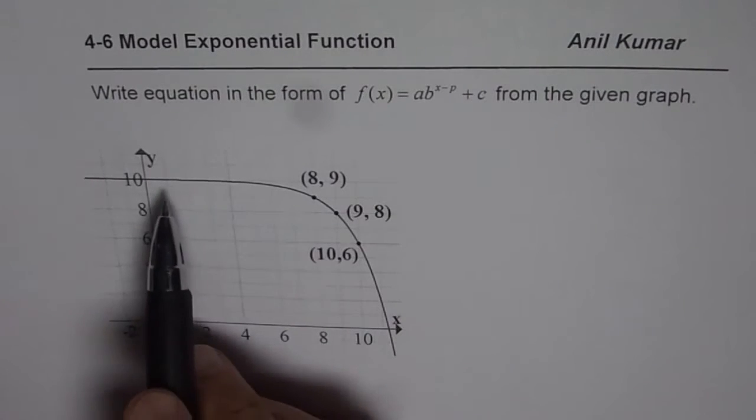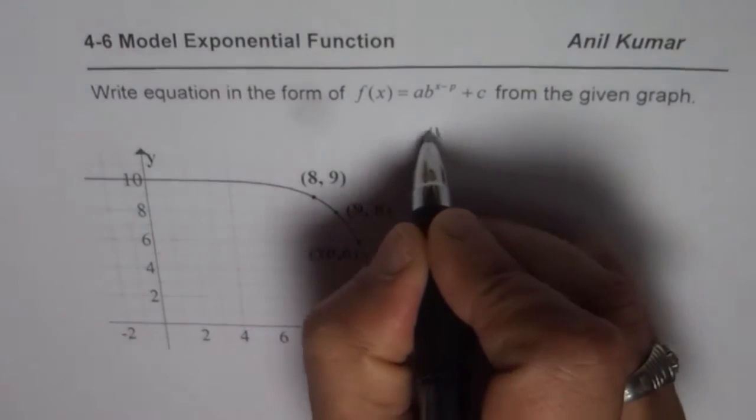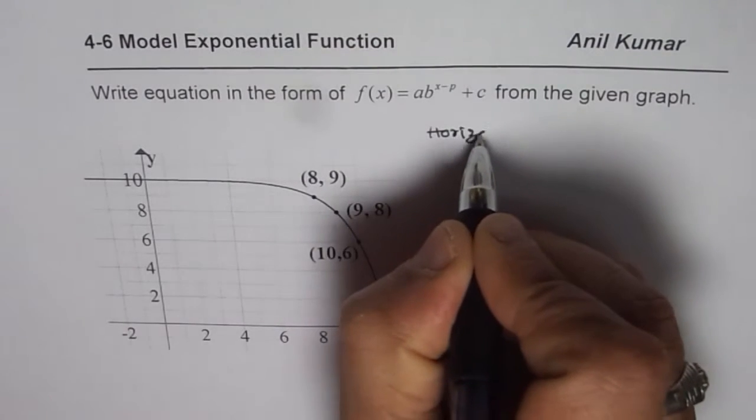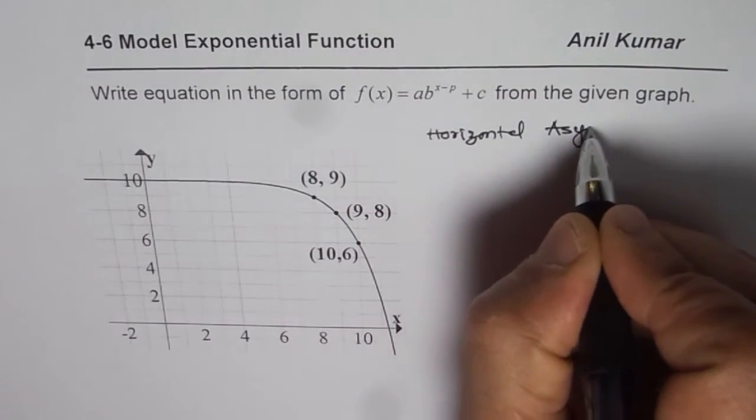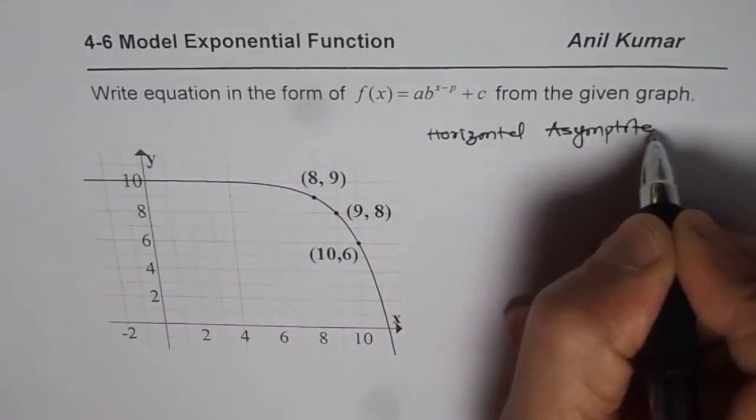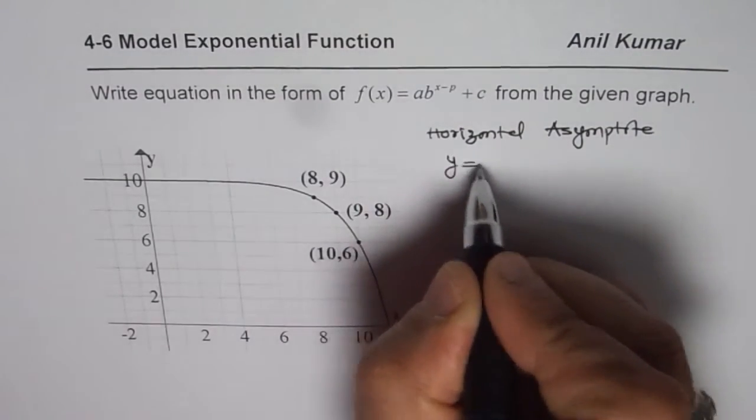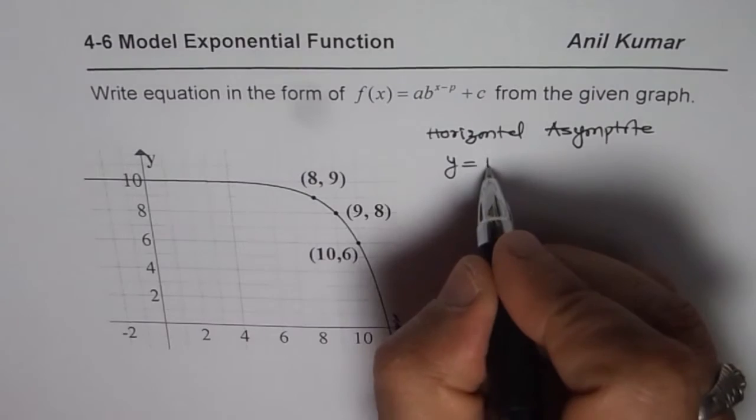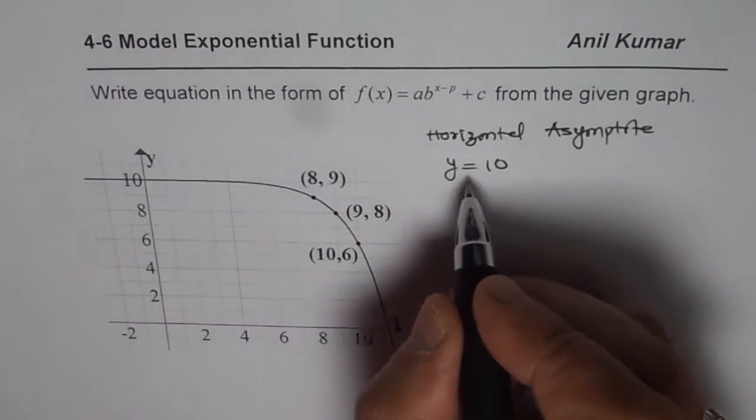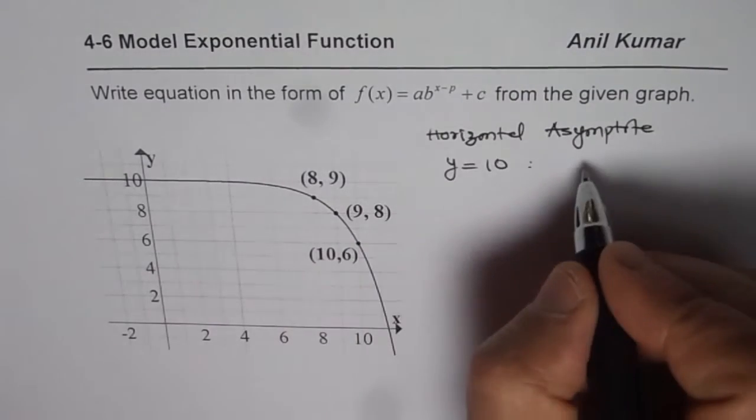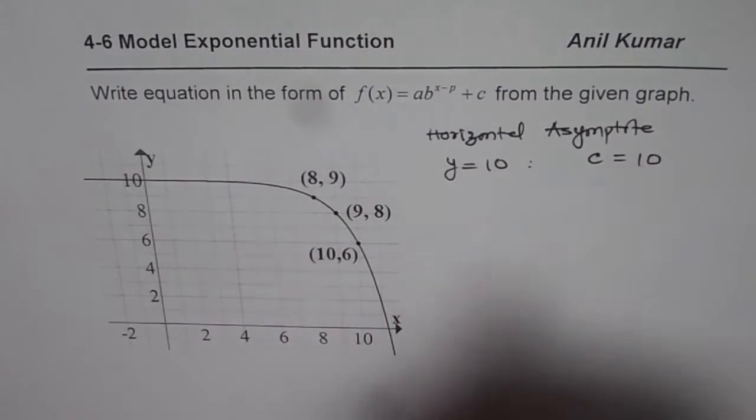The first thing which we should always look into is the horizontal asymptote. Now for this graph, where is horizontal asymptote? The horizontal asymptote is y equals to 10. It looks like it is touching 10 but it is approaching 10. So that horizontal asymptote gives you the value of c. So we know c equals 10.